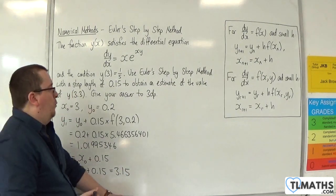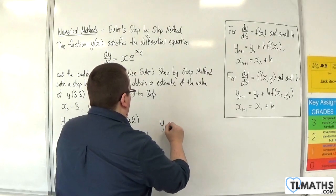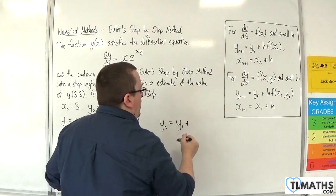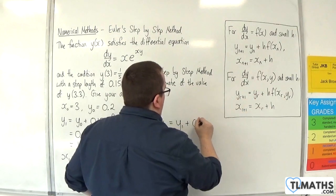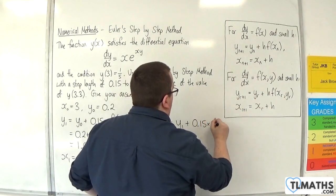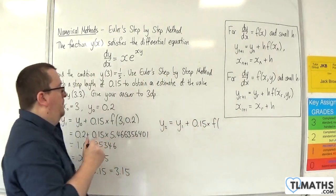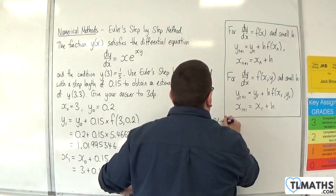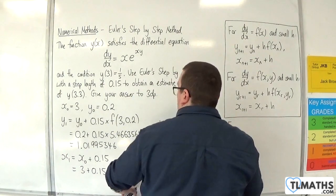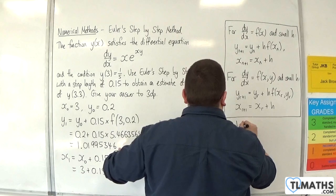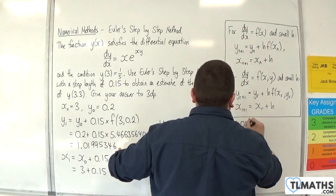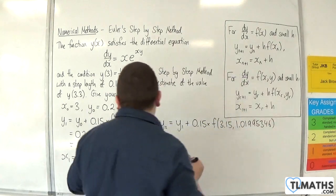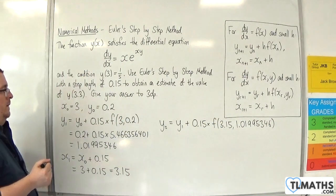So now I can find y₂. So y₂ is the previous term, y₁, plus the step length, 0.15, times by f of x₁, y₁. Now x₁ is 3.15. And y₁ is this. So 1.01995346.